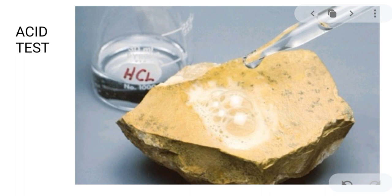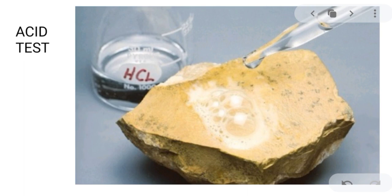Another way to identify a mineral is by acid test. Earth scientists use an acid test to find out if a mineral is a carbonate mineral. Most carbonates give off carbon dioxide gas. They use diluted hydrochloric acid or muriatic acid placed on the sample. If it fizzes or bubbles up, that is an indicator of the presence of carbon dioxide, indicating a chemical change — that is the acid test.